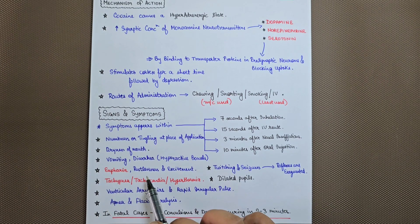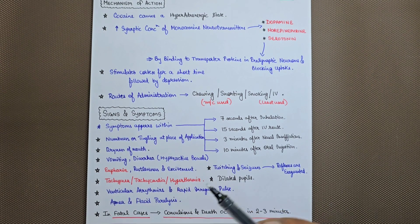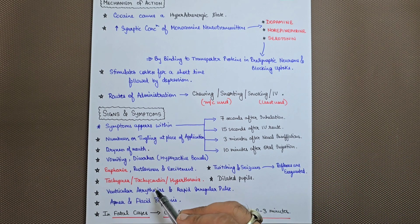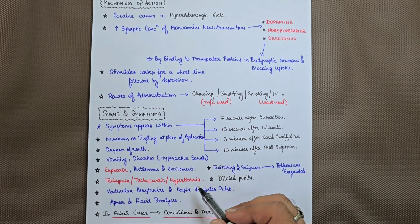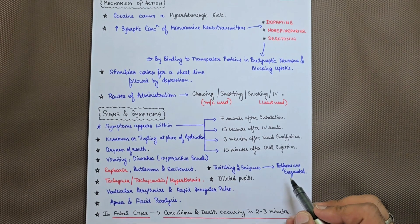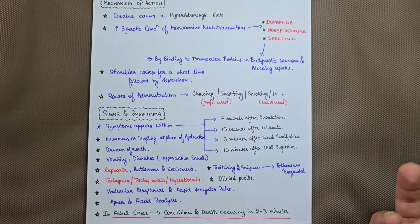Patient will feel euphoria, restlessness, and excitement. Also, other symptoms like tachypnea, tachycardia, and hyperthermia. Patient can also have twitching and seizures with exaggerated reflexes.